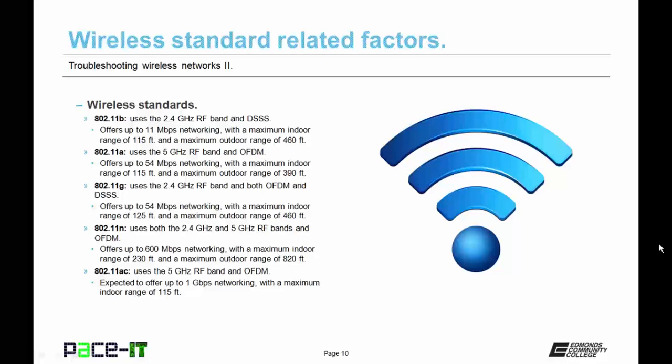802.11n can offer up to 600 Mbps networking with a maximum indoor range of 230 feet and a maximum outdoor range of 820 feet. Finally, we have 802.11ac. It uses the 5 GHz RF band with OFDM as its method of modulation. It's expected to offer up to 1 Gbps networking with a maximum indoor range of 115 feet. At this point in time, we do not have a maximum outdoor range as they're still working on establishing that.